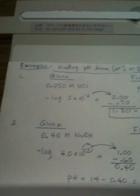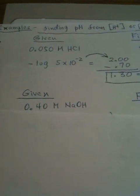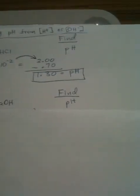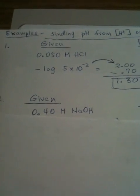Here's a second example. This time, let's concentrate again on just the given and find. We're going to be given 0.40 molar sodium hydroxide. We're asked to find the pH. We've got to be careful here, because this is hydroxide.